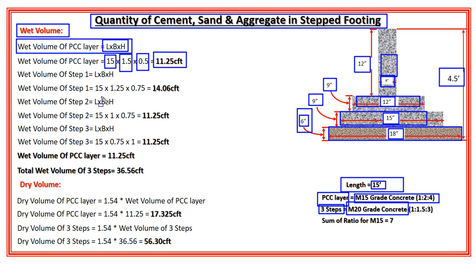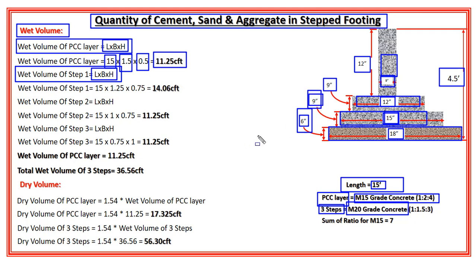Next I have to find the wet volume for step 1. The wet volume equals length × breadth × height. The length is 15 feet, the width of step 1 is 15 inches which equals 1.25 feet, and the height is 9 inches which equals 0.75 feet. So the wet volume of step 1 = 15 × 1.25 × 0.75 = 14.06 cubic feet.